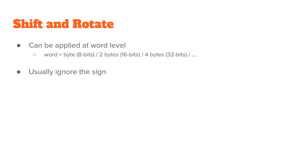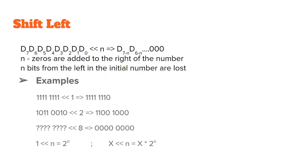Also, the shift and rotate operations usually ignore the sign. In some cases the first bit is also known as the sign bit. Today we are going to ignore this and just consider the entire word as binary digits without considering the sign. So let's take a look at the first operation: shift left.